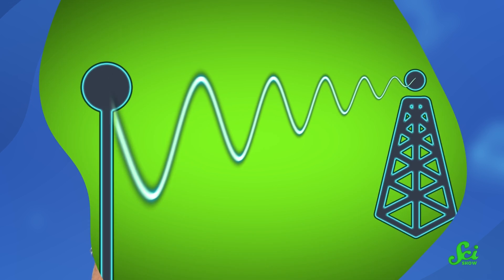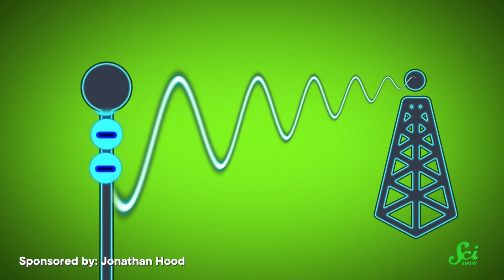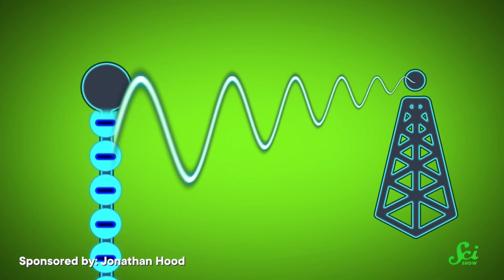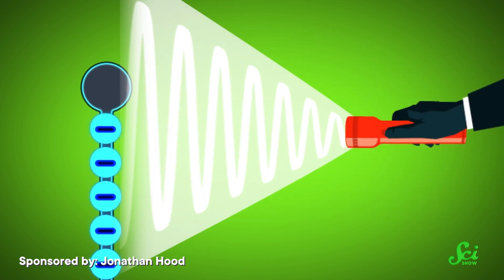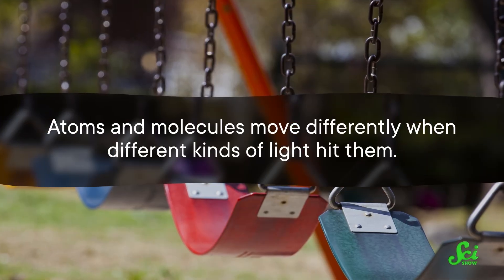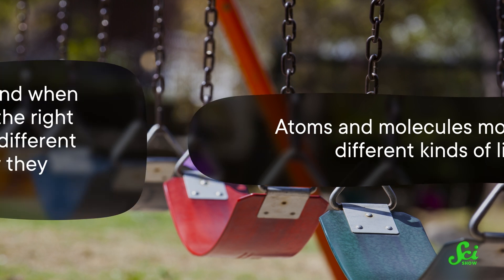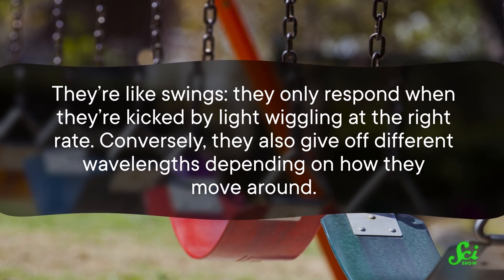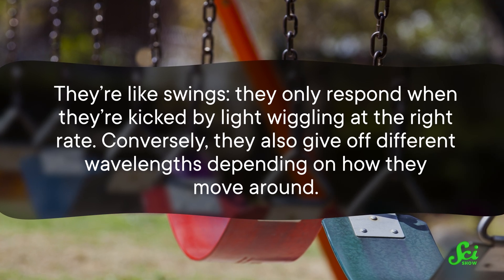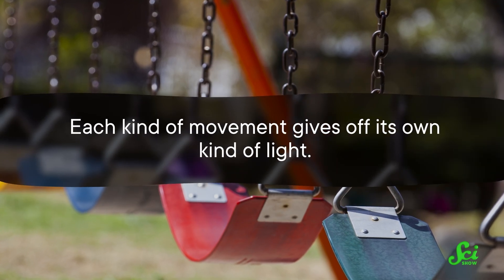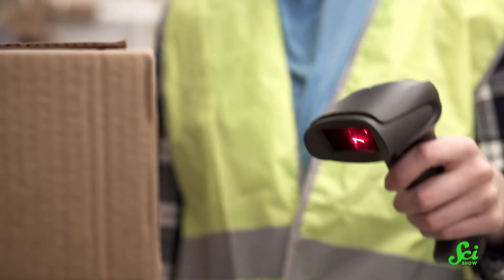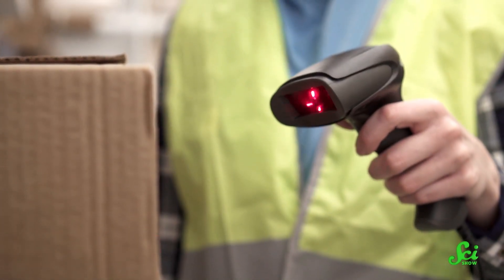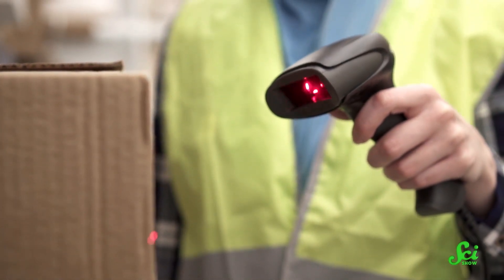Different wavelengths of light interact with objects in different ways, which is why shining a flashlight at an antenna doesn't affect radio reception. The antenna works because long-wavelength radio waves push around electrons inside it, but those electrons don't respond to shortish-wavelength visible light. Atoms and molecules move differently when different kinds of light hit them. They're like swings — they only respond when they're kicked by light wiggling at the right rate. Conversely, they also give off different wavelengths depending on how they move around. Each kind of movement gives off its own kind of light. If only one or two kinds of movement are happening at once, you get something like a laser, where all the light coming out has the same wavelength.